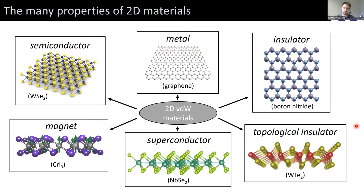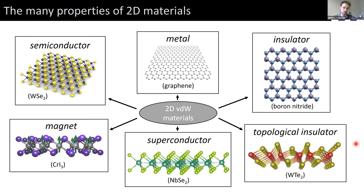Why is this interesting? Every type of electronic property we know of in a three-dimensional bulk crystal — metals, insulators, semiconductors — we have now discovered an analog in a two-dimensional atomically thin sheet. Graphene is a canonical example of a semi-metal, boron nitride a canonical example of an insulator. On the more exotic side, we have ferromagnets, superconductors, and topological insulators. For this talk, I want to focus on just graphene and boron nitride — all the action will be in the graphene, and the boron nitride is just making the graphene quality higher.